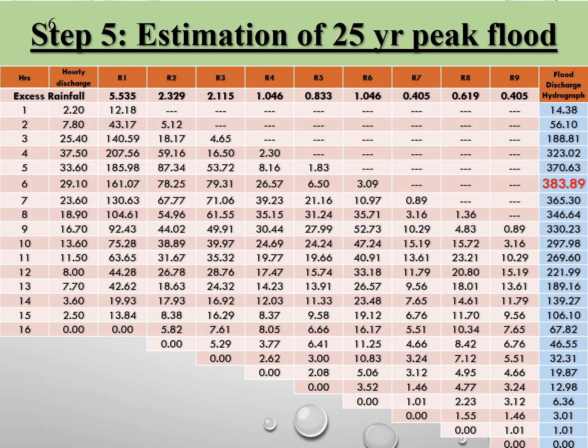Step 5 is for the estimation of the 25-year peak flood. Here, 16 hours is the storm duration, and hourly discharge is obtained from the synthetic unit hydrograph parameters using the smoothly drawn synthetic unit hydrograph. The excess rainfall values obtained in the previous slide are written in the second row as 5.535, 2.329, and so on.